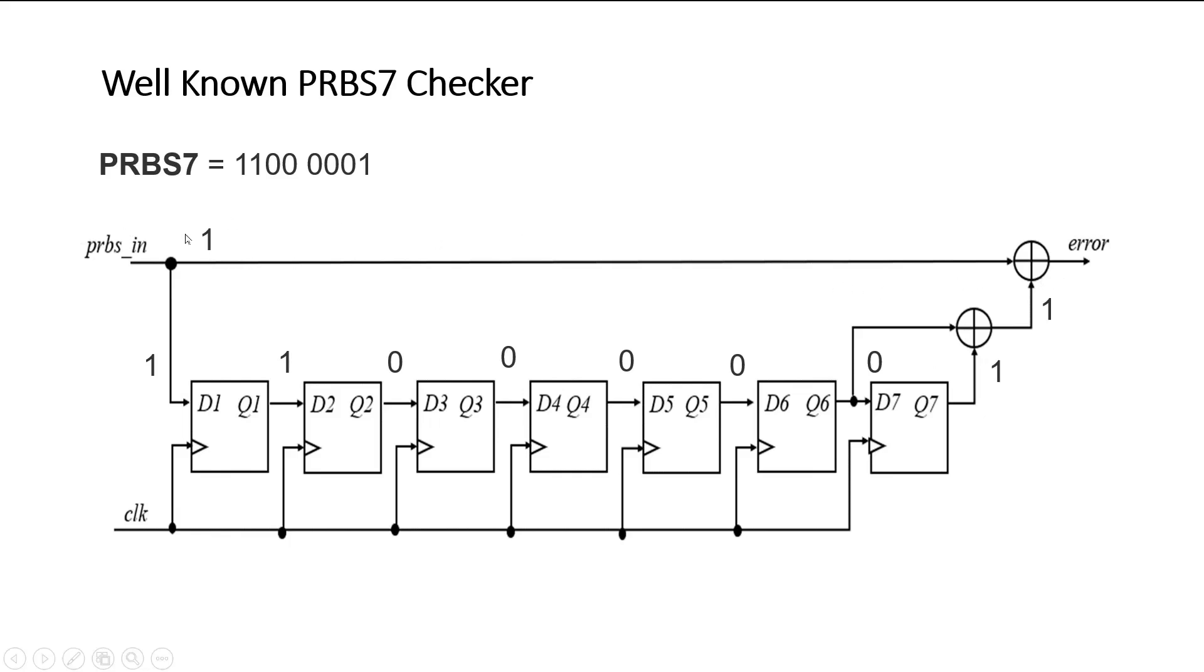So ideally, if there is no error in the PRBS in sequence, the error flag should be always zero. In short, what do I mean? Whatever bit we are forming with the help of this XOR gate is actually an expected PRBS bit, and the same should appear here if there is no error in the input PRBS sequence, and error flag will be always zero.